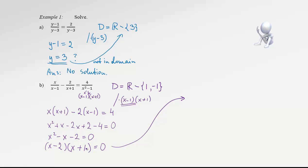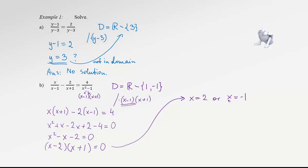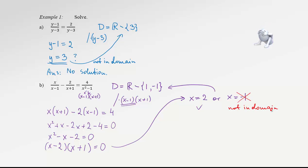Using the zero product property, either the first bracket is 0 or the second bracket is 0. The first bracket gives x equals 2, and the second gives x equals negative 1. Those are our candidates. Checking against the domain: 2 is in the domain, so that's a valid solution. However, negative 1 is not in the domain — it's exactly excluded. So we cross it out and mark: not in domain. The final answer: the solution set contains just one number — 2, or simply x equals 2.